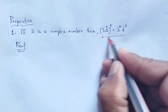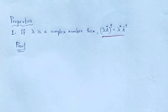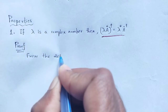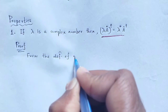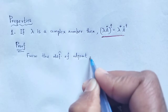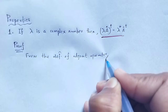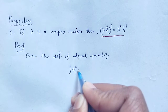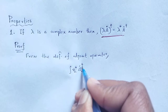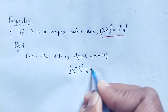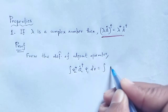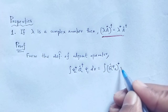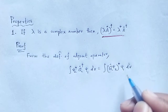We have to prove that one. From the definition of adjoint operator: integration over psi-2-star Q-cap-dagger psi-1 dτ is equal to integration over Q-cap psi-2-star psi-1 dτ.